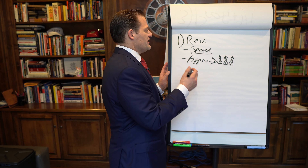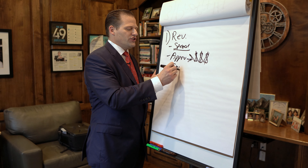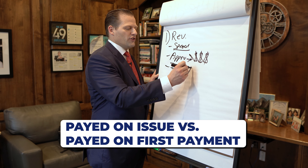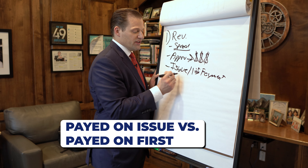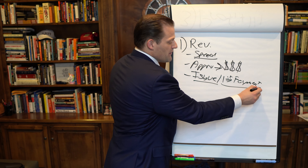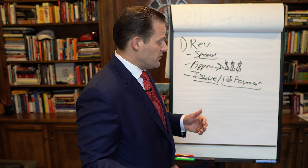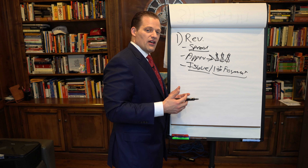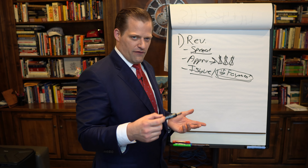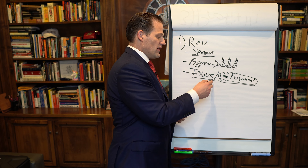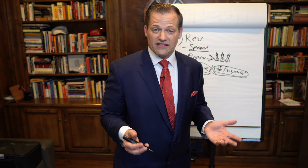There are also nuances around the speed at which your advance happens based on whether you get paid on issue versus on first payment. Some carriers pay immediately after the policy is approved before the first payment clears, while others require that first payment to go through — which can delay your first commission by a couple of weeks or a month. Carriers that pay on issue get you your advance commission upfront before the plan is even paid for.